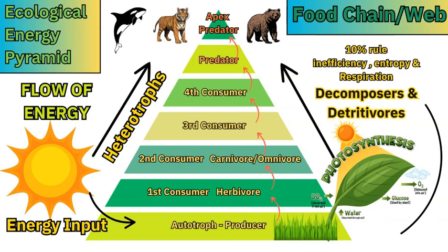The Earth takes in about 70%, and of that, only about 1 to 3% of the actual energy received is converted and used by biomass — by vegetation, plants, and autotrophs. Autotrophs create their own energy from chemical reactions involving sunlight. Without sunlight, they can use chemicals and elements in a process called chemotrophy or chemo-autotrophy. Autotrophs are producers — like grasses, plants, and trees — using chlorophyll through leaves to convert sunlight into glucose and sugars.